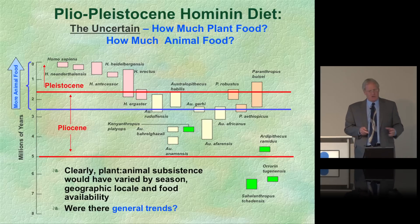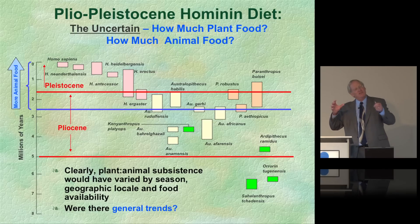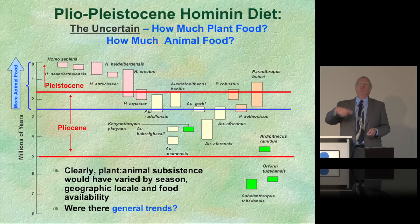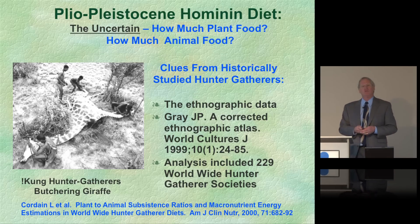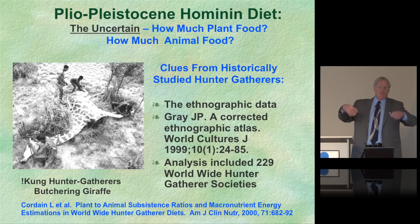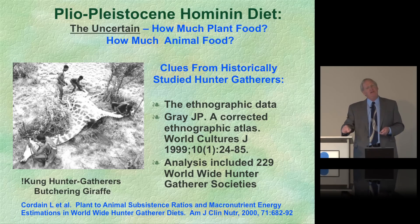So how much plant food and how much animal food were consumed in the ancestral diet? This is the evolutionary template we need to address when discussing a healthful diet today. Should we eat a vegan vegetarian diet? Should we eat a high-meat diet? We published a paper in the American Journal of Clinical Nutrition in 2000 compiling data from a document called the Ethnographic Atlas, which recorded the diets of all the world's hunter-gatherers as documented by frontier physicians, anthropologists, and explorers.